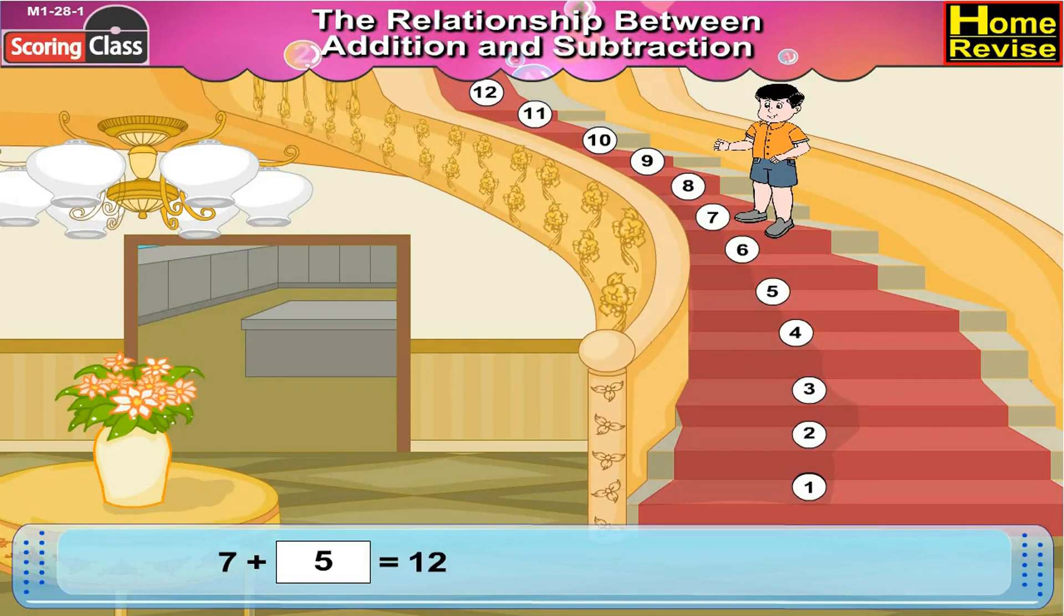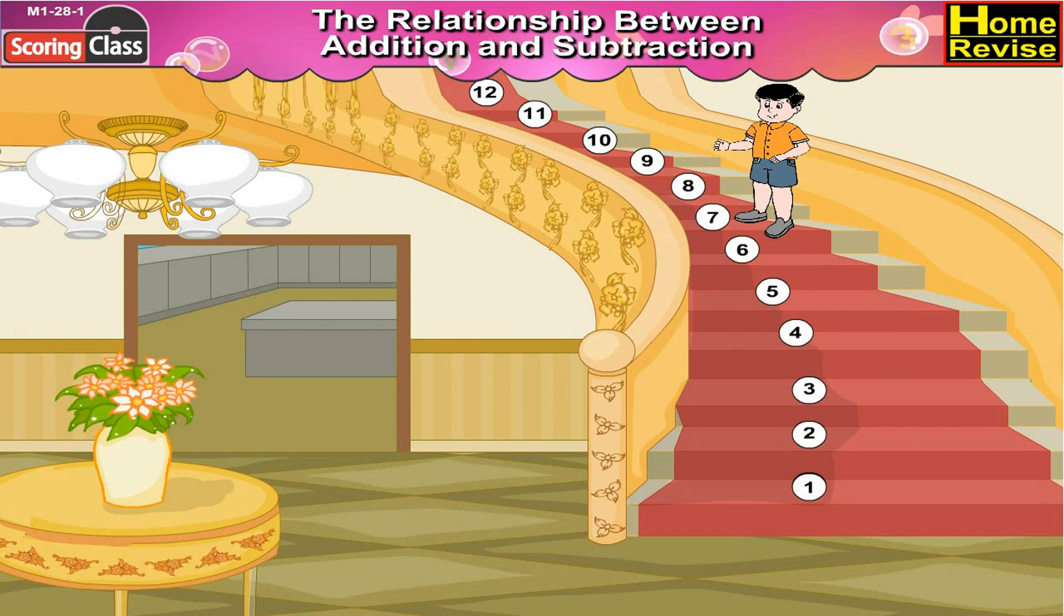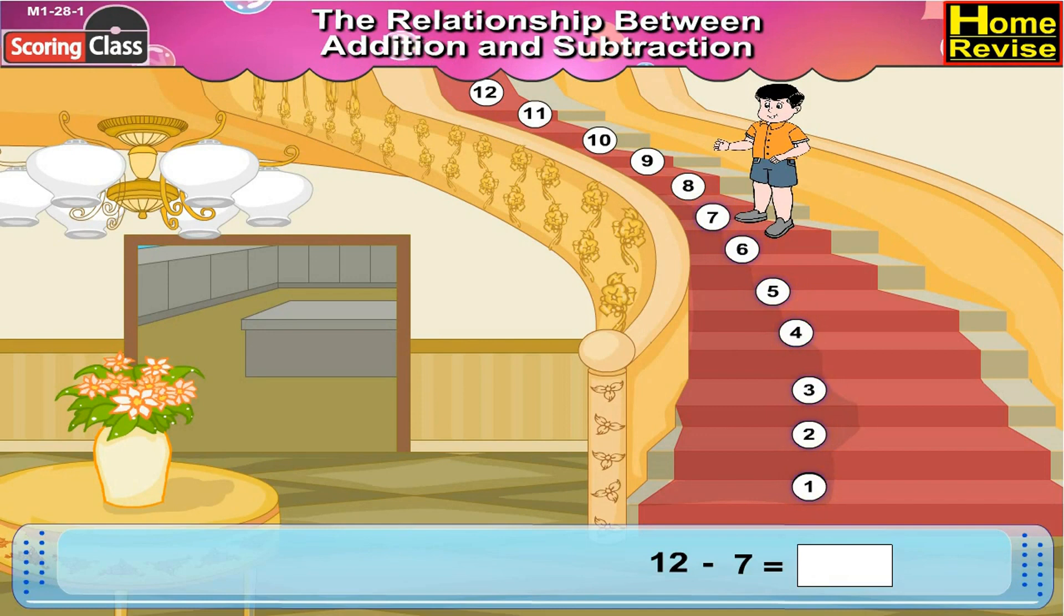And you know what? We have another way to solve it as well. Now total steps are 12. Bittu is at step number 7. 12 minus 7 is equal to 5. You know what it means? It means he needs to climb 5 more steps to reach 12.